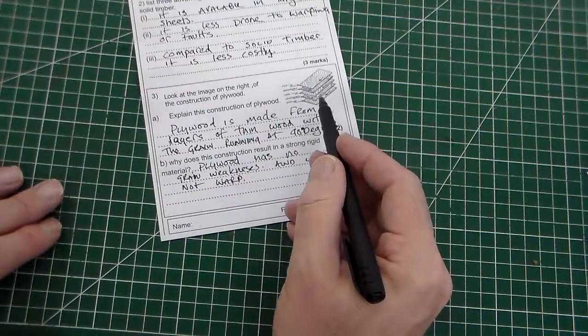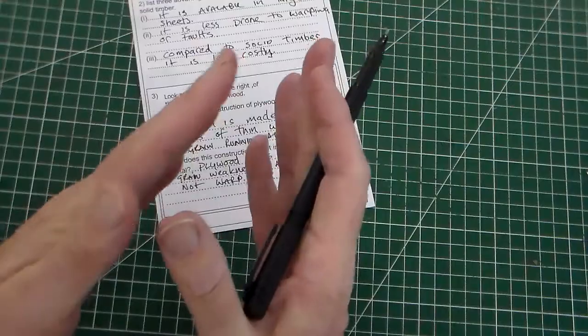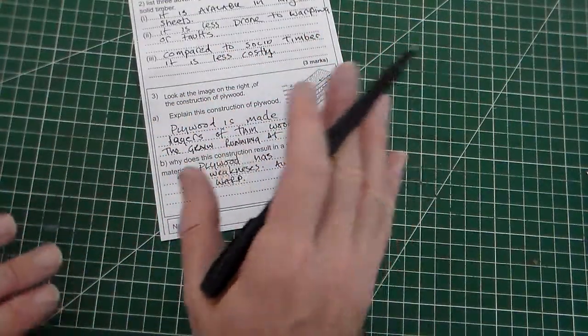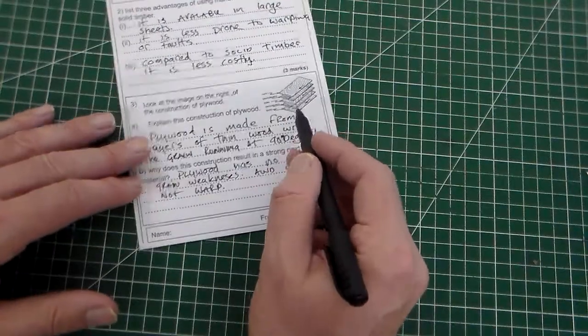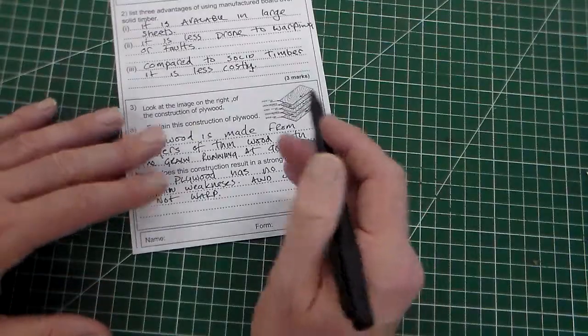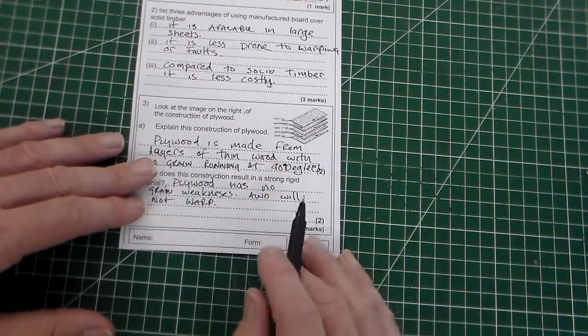The main reason for warping in timber is where all the grain is going in one direction and that it's unstable in that kind of area. But, with this, you don't get, and of course, it's stabilized with the glue inside as well.